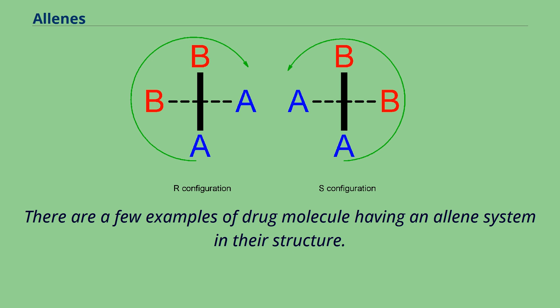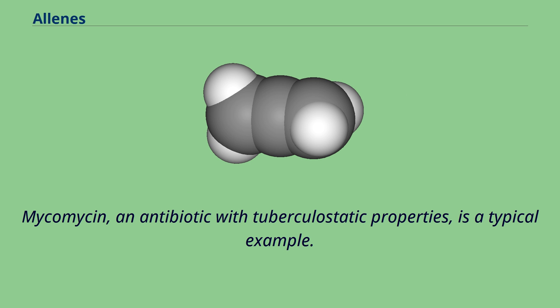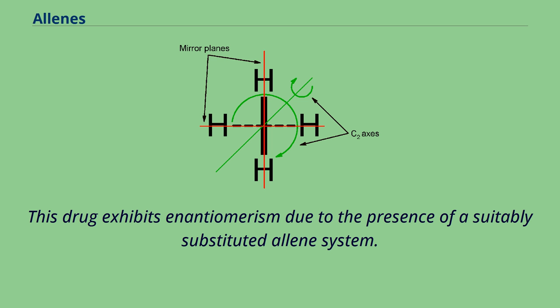Chiral allenes have been recently used as building blocks in the construction of organic materials with exceptional optical properties. There are a few examples of drug molecules having an allene system in their structure. Mycomycin, an antibiotic with tuberculostatic properties, is a typical example. This drug exhibits enantiomerism due to the presence of a suitably substituted allene system.